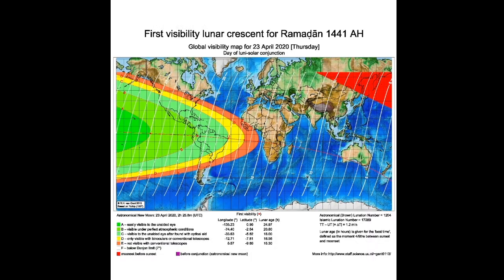So if we want to use scientific data to accurately predict when Ramadan is going to begin, all we have to do is go to the 29th of the month before Ramadan and use our data to look at whether the Moon will be visible that evening or not. If it is visible, Ramadan begins; if not, we wait an additional day. Let's take a look at the data. This is a predicted Moon visibility map for the 29th of this Islamic month, called Sha'aban, which will fall on Thursday the 23rd of April.